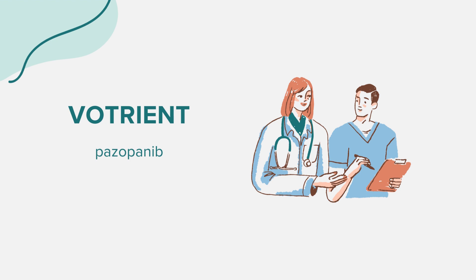Votrient should be taken exactly as prescribed by your doctor. It's recommended to take it on an empty stomach, either 1 hour before or 2 hours after a meal. The tablet should be swallowed whole without crushing, chewing, or breaking it. For adults with renal cell carcinoma or soft tissue sarcoma, the usual dose is 800 mg orally once a day. It's important to avoid grapefruit or grapefruit juice while on this medication, as it can increase the plasma concentration of the drug.